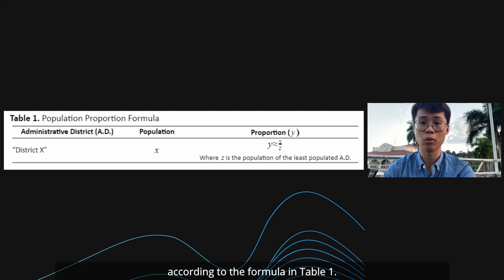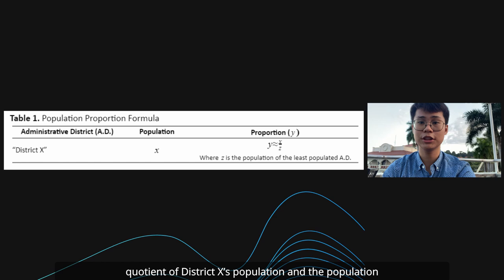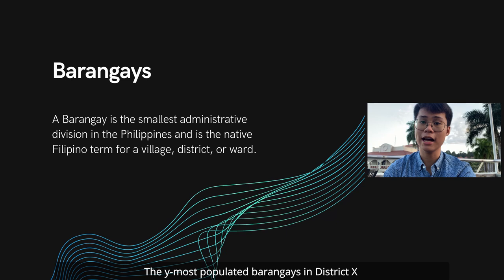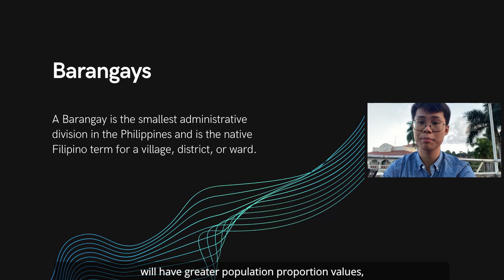The variable y refers to the number of nodes assigned in district x. Its value is the rounded off quotient of district x's population and the population of the least populated district. The y-most populated barangays in district x would then be selected as nodes. With this, administrative districts with larger populations will have greater population proportion values, meaning more jeepney stops will be assigned in this area.